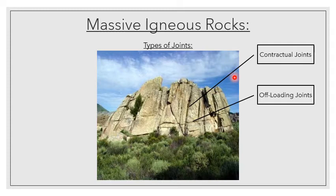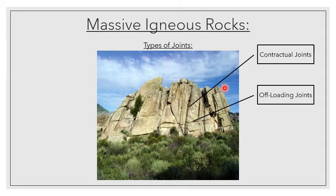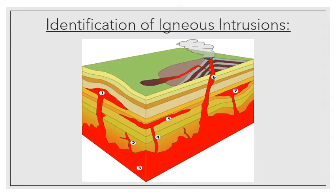When we deal with batholiths — the big dome-shaped intrusions at the bottom — we need to consider how they cool. When these batholiths cool down, solidify, and crystallize, they form contractual joints, because the magma contracts as it cools and forms these vertical downward joints. As the overlying strata is then eroded away, we form offloading joints — horizontal cracks found along igneous intrusions — as the batholith can expand again due to the release of pressure.